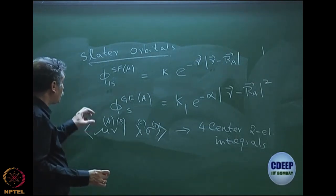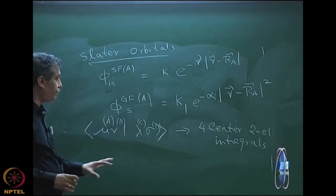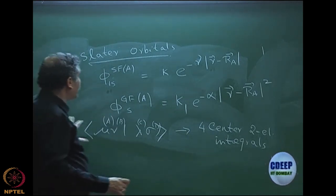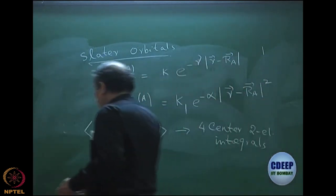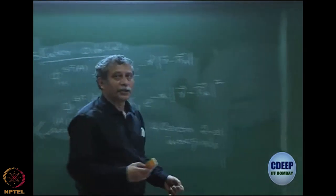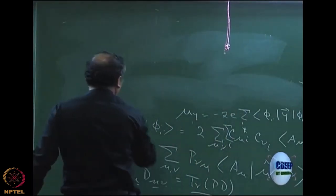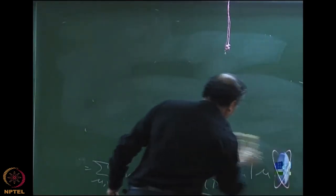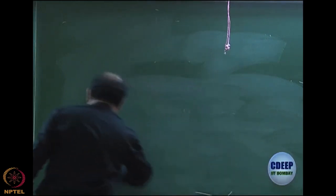On the other hand, if I use Gaussian functions instead of Slater functions, then these integrals should be very easy to evaluate, for a very simple reason: Gaussian functions follow a very interesting theorem, which I will now write down. Let us say I have two Gaussians — let me first state the theorem, talking only of S-type Gaussians.